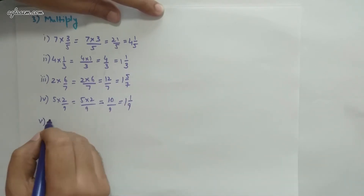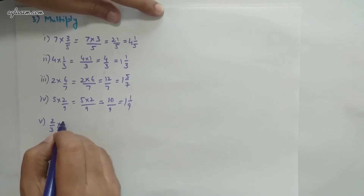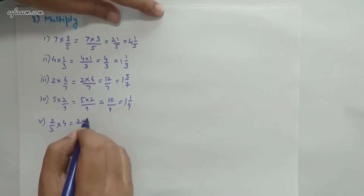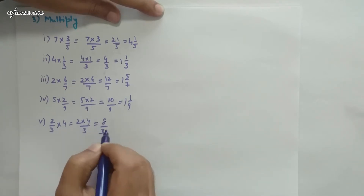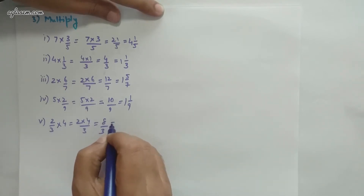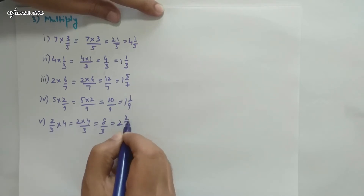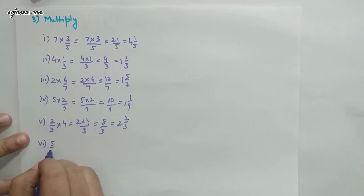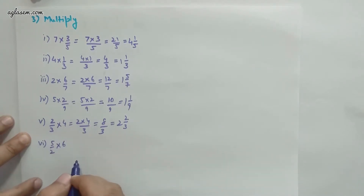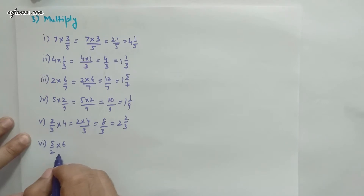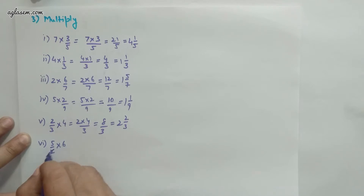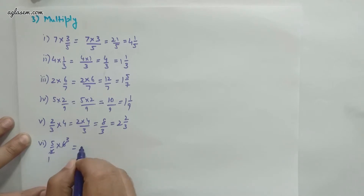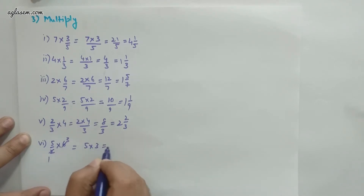Part 5: (2/3)×4 = 2×4 divided by 3 = 8/3, which converts to 2 and 2/3. Part 6: (5/2)×6. Since 6 is a whole number, we can reduce: 6 divided by 2 = 3, so it becomes 5×3 = 15.